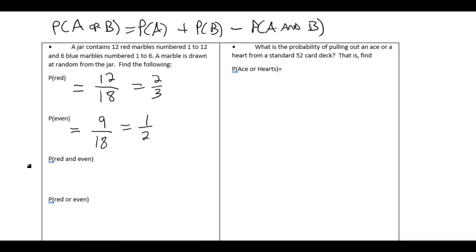Now the probability of red and even. If you think of the sample space, there are 12 reds. And of those, half of those are also even. So we have a total of six that are red and even out of the 18 in the jar. That would reduce to one-third.